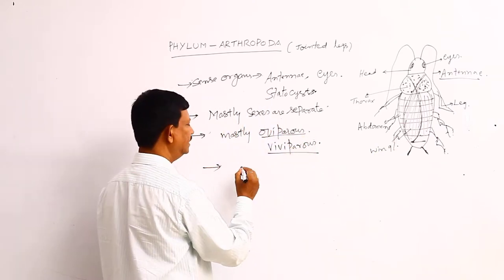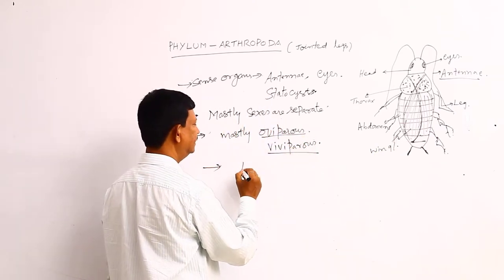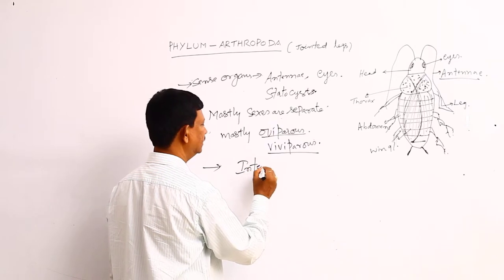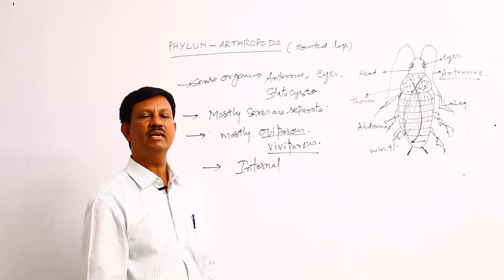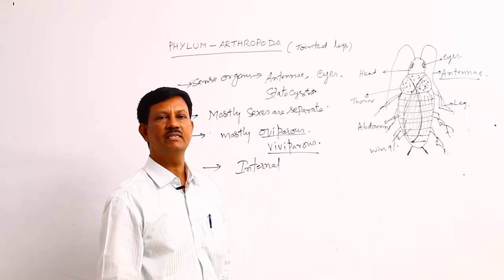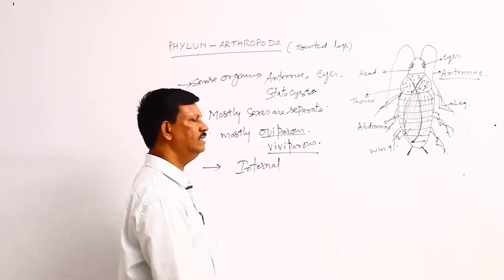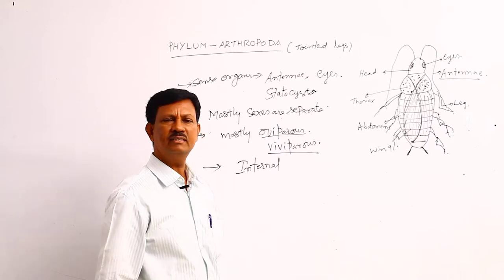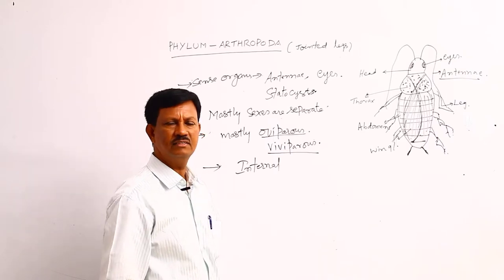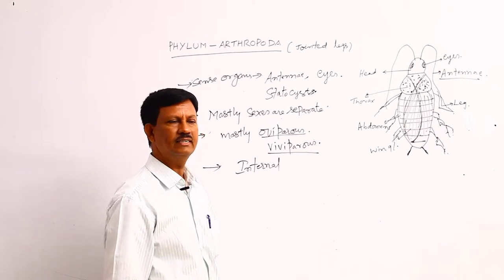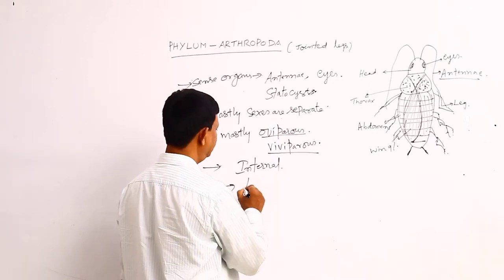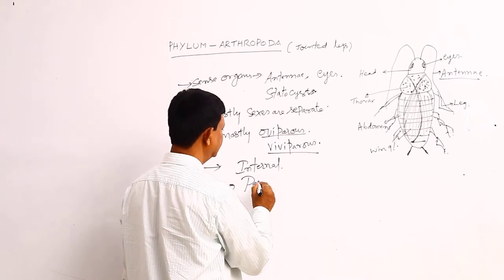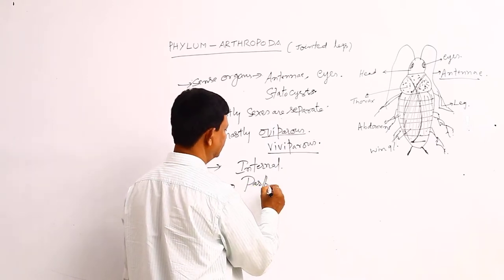Fertilization is mostly internal. If the union of the male and female gametes takes place inside the body, that is internal fertilization. In some animals external fertilization is also present, though it is very rare. And parthenogenesis is present in some animals.